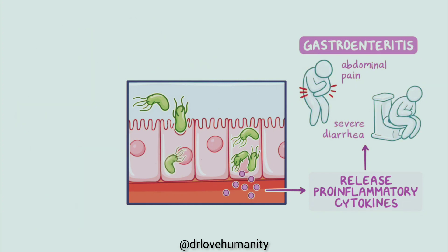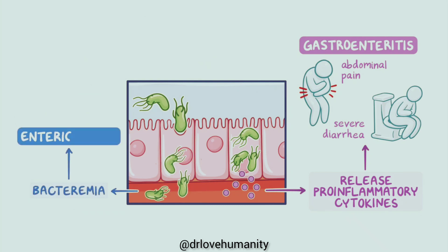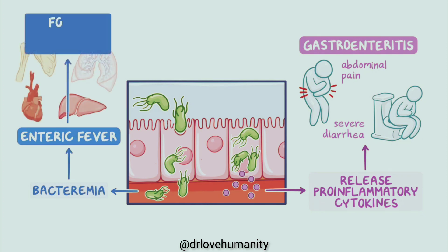The bacteria can also enter the blood, termed bacteremia, and cause enteric fever. From there, they can make their way to other organs like the liver, lungs, heart, and bone to cause focal salmonella infection.